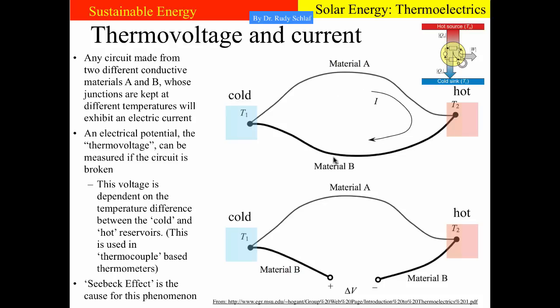We could put a load in the circuit and then work would be performed in this load. If we just have the wires, they would heat up. If we cut the circuit, the electrons will still be pushed but the current cannot flow in a circle anymore. What we get is an accumulation of negative charge on one end and a lack of electrons on the other, so that end turns positive. This is a voltage we can measure with a voltmeter. This voltage is called thermovoltage, and it is essentially dependent on the temperature difference between the hot and the cold reservoir.